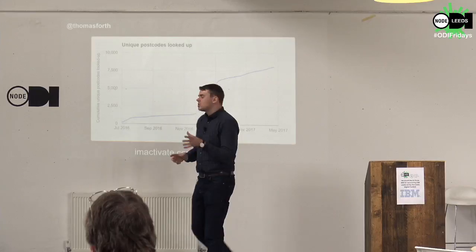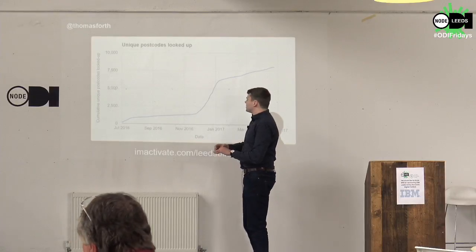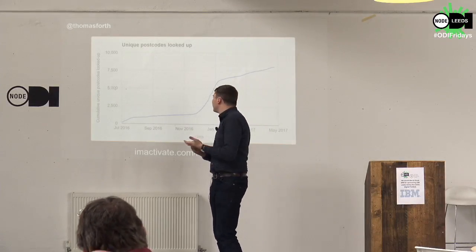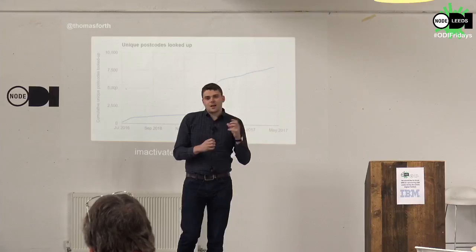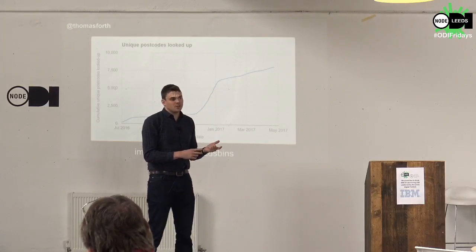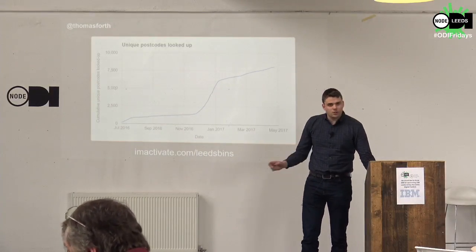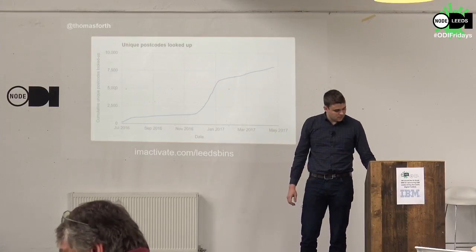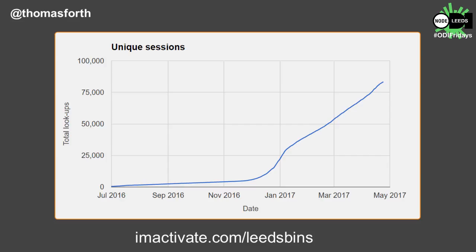This is the kind of use we've had of the app. Since we launched in July 2016 and started promoting things over Christmas at the end of 2016, we're now up to around 8,000 unique postcodes looked up using the app. This app only works in Leeds, and there are only 22,000 postcodes in Leeds, so 8,000 of 22,000 is huge coverage. We think we'll hit 100,000 unique sessions sometime in the coming week.